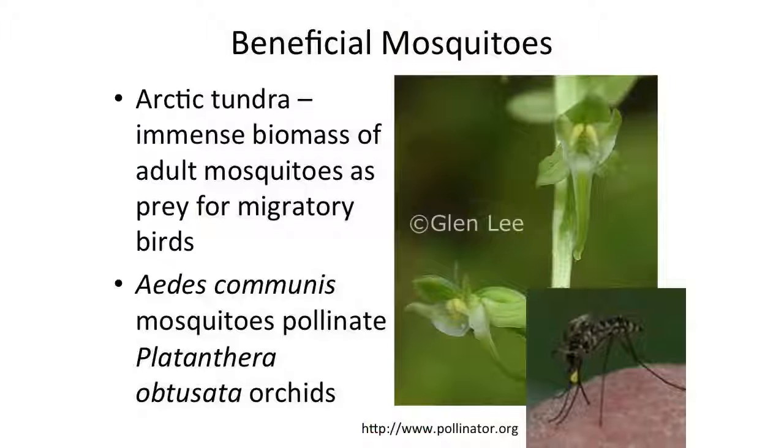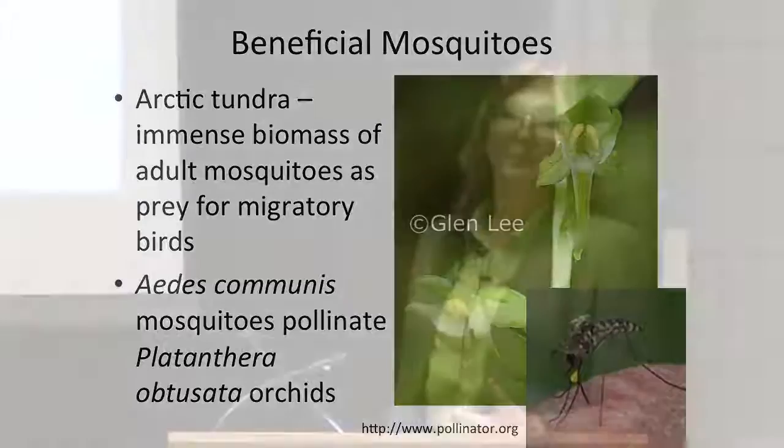They're really quite remarkable looking, and they also play some really remarkable roles in the ecosystem. With 3,500 species, obviously somebody has to be doing something good. If you go up to the Arctic, to the tundra, there's a huge biomass of mosquitoes every spring. Many of the migratory birds up there gorge on the thousands and tens of thousands of mosquitoes that emerge. So they're definitely a source of food for migratory birds up in the Arctic.